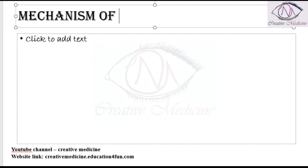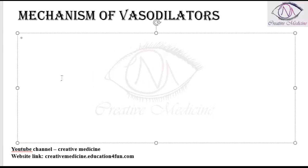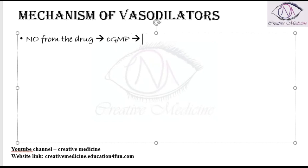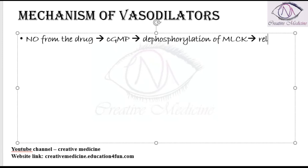Different mechanisms of vasodilators: first, some vasodilators will release nitric oxide from the drug. When they release nitric oxide, this will activate cyclic GMP, which causes dephosphorylation of myosin light chain kinase, thus leading to relaxation of the blood vessels, which causes vasodilatation.